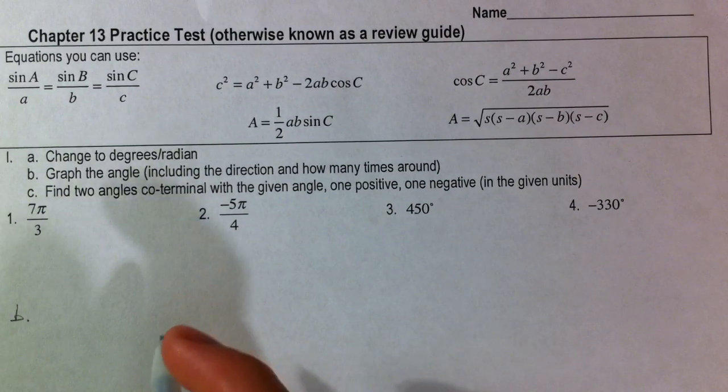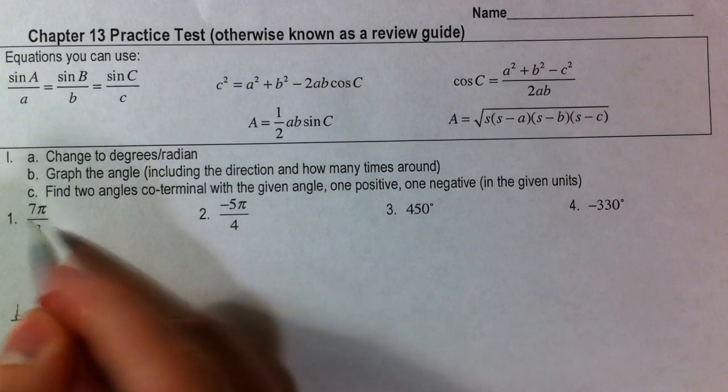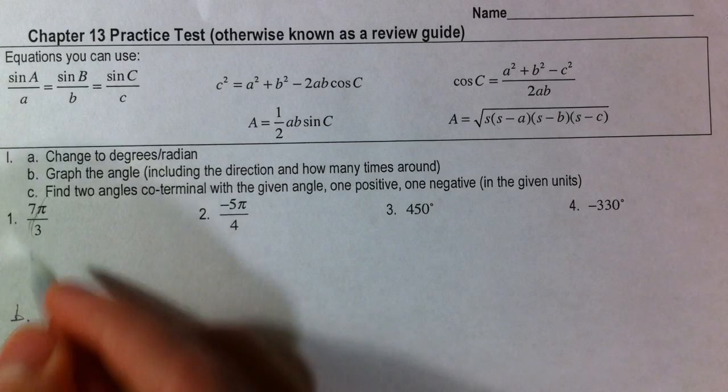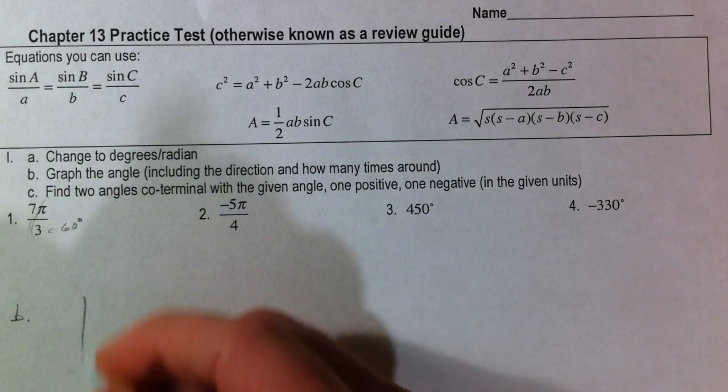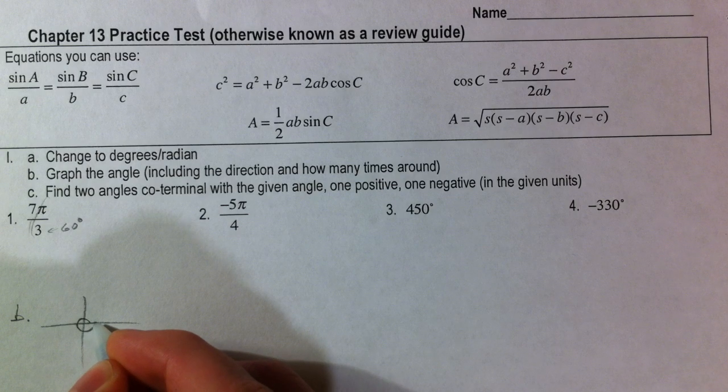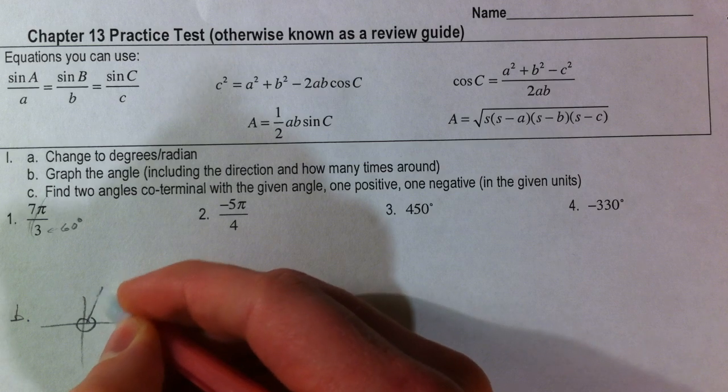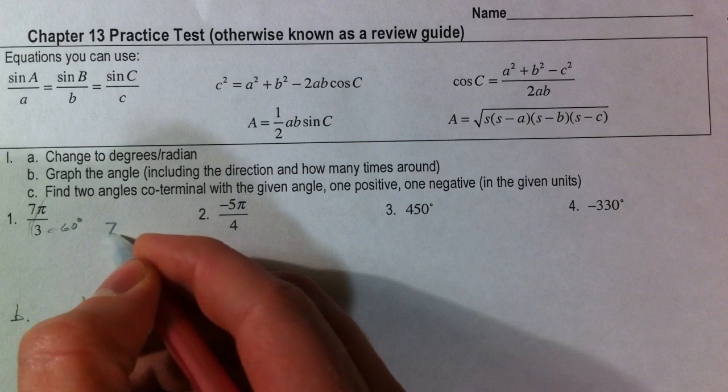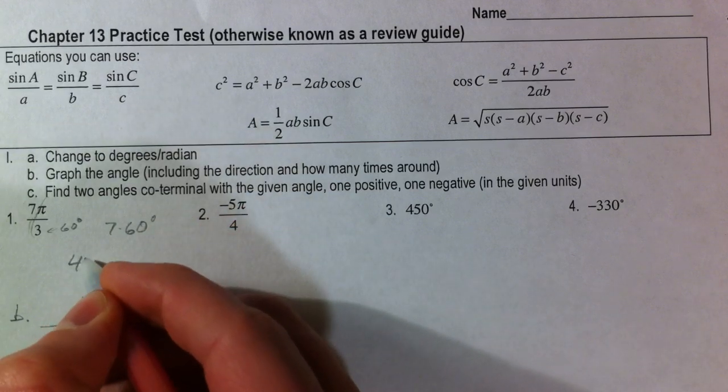7π over 3. If you see the over 3, that's 180. If you think π over 3, that's a third of 180, or 60 degrees. So that's a 60 degree angle, and we have 7 of them. So if you graph it, we've got 3, 6π over 3, and then there's another π over 3. That's 7 60 degree angles, or 7 times 60, so that's 420 degrees.